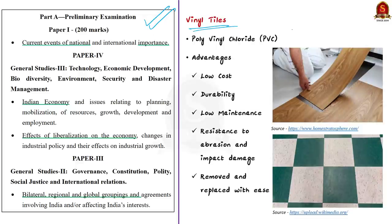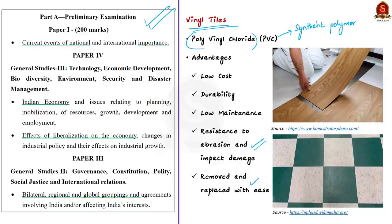Vinyl tiles are made from polyvinyl chloride (PVC), which is a synthetic polymer. These vinyl tiles have advantages over traditional ceramic tiles — they are low cost, durable, easy to maintain, and have high resistance to abrasion and impact damage. If properly installed, they can be removed and replaced with ease.